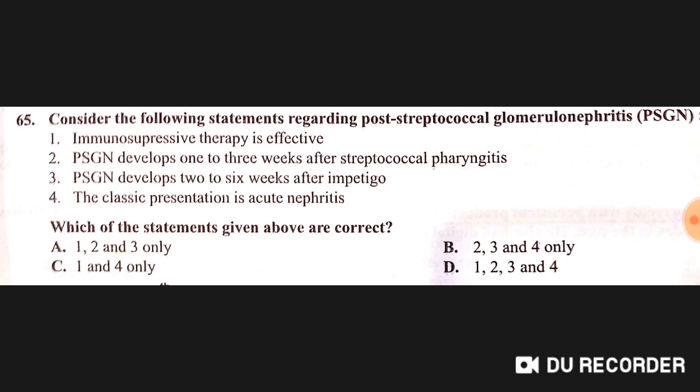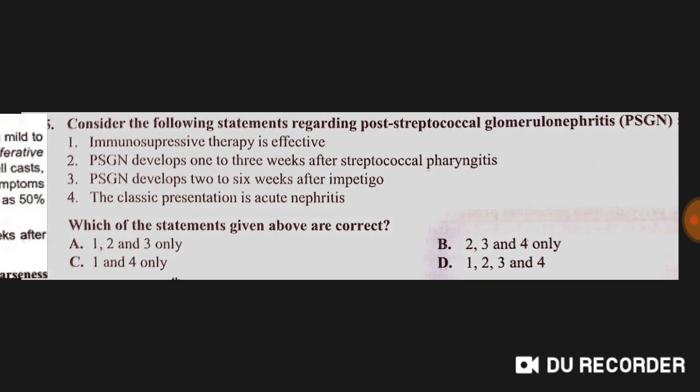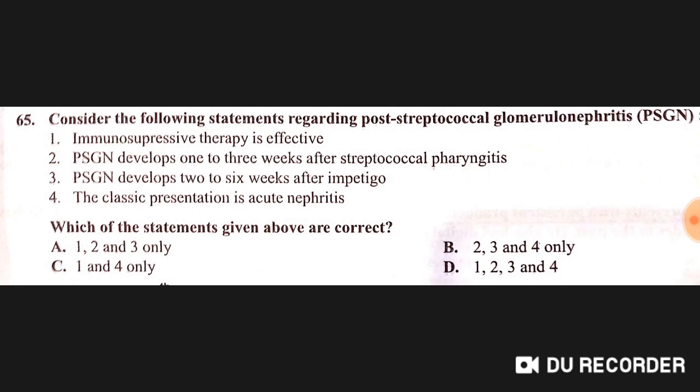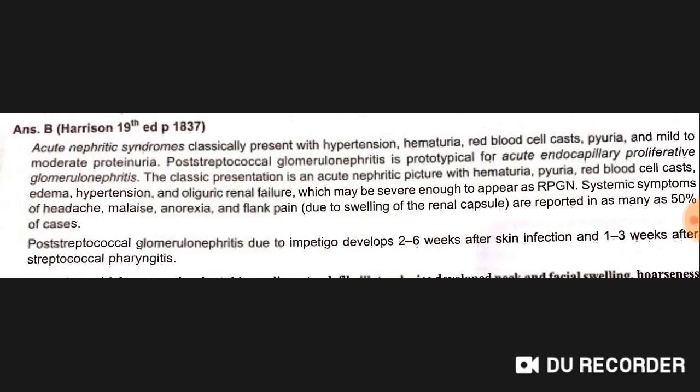Consider statements regarding post-streptococcal glomerulonephritis (PSGN): immunosuppressive therapy is effective — No. PSGN develops one to three weeks after streptococcal pharyngitis — Yes. PSGN develops two to six weeks after impetigo — Yes. The classical presentation is acute nephritis — Yes. The answer includes the second, third, and fourth statements.